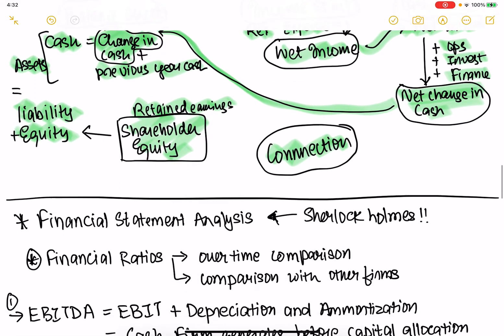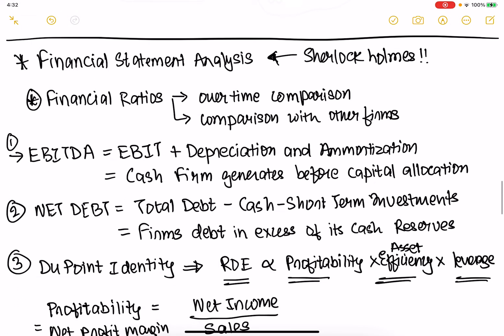Now we're going to look at financial statement analysis — can we be the Sherlock Holmes and try to understand whether this company is doing well? There are 10 metrics picked from this book that has a really good set of metrics. These ratios can be used to compare things over time and also to compare with other firms.